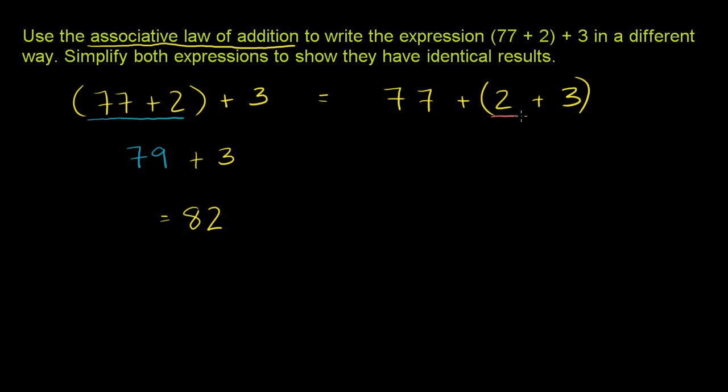So 2 plus 3 is 5. So this evaluates to 77 plus 5. And 77 plus 5, once again, is 82. So it doesn't matter how you associate the numbers. Either way, you get 82. And that's the associative law of addition.